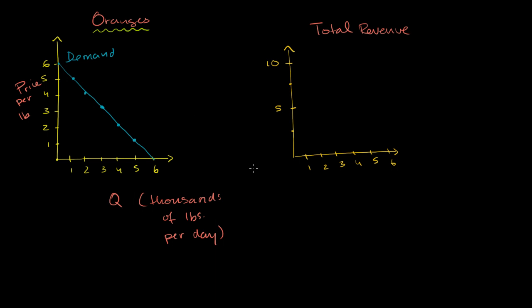Let's figure out total revenue first. If we produce zero quantity, total revenue is price times quantity — price is six, quantity is zero, so total revenue is zero. If we produce one unit (1,000 pounds per day), total revenue is one unit times $5 per pound, so $5,000. You can view this as the area of a rectangle where height is price and width is quantity. So at one unit, we get $5,000. The axes here are in thousands of dollars and thousands of pounds.